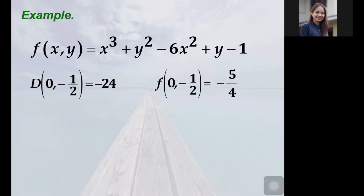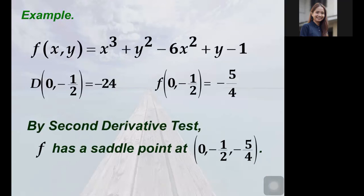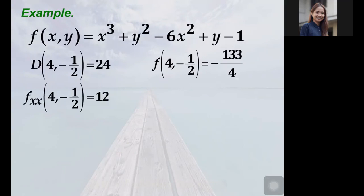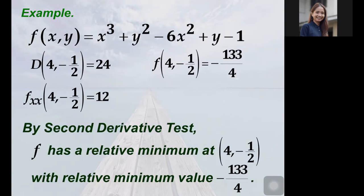For the first critical point (0, −1/2), the determinant is −24. Therefore, we conclude that the function has a saddle point at (0, −1/2, −5/4), where −5/4 is the function value at (0, −1/2). For the second critical point (4, −1/2), the determinant is 24 and the second order partial with respect to x is positive 12. So we conclude that the function has a relative minimum value at (4, −1/2), with the minimum value −133/4.